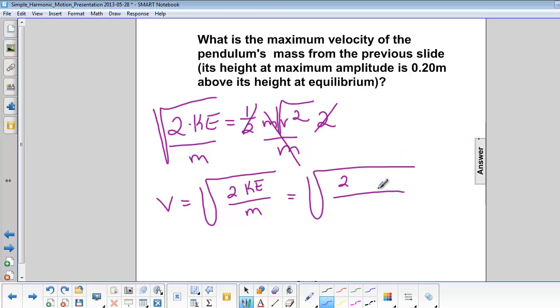So now the kinetic energy is the same as the gravitational potential energy we found before. And that was 1.96 joules. And the mass is still 1 kilogram.